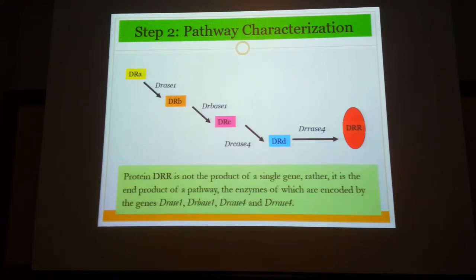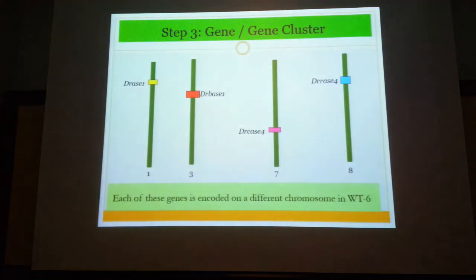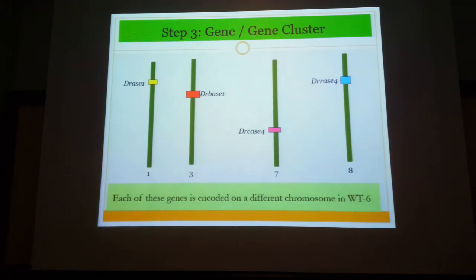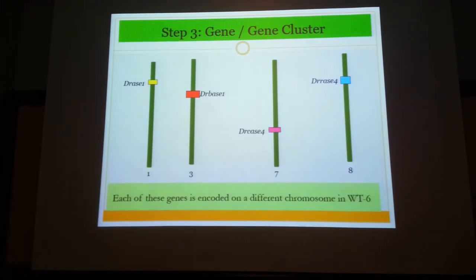In order to transfer this trait into an elite variety of rice, you need to transfer the entire cluster of genes. The challenge is that in the wild-type plant, all these genes are located on different chromosomes. You have two approaches: one, you can sequence the genome, isolate the genes, and use synthetic biology to develop your construct.